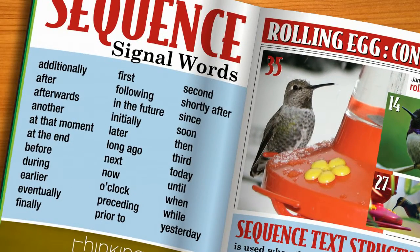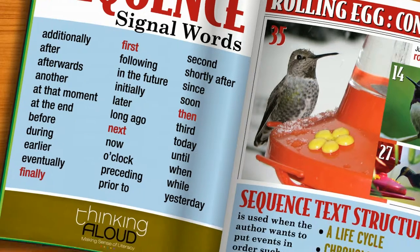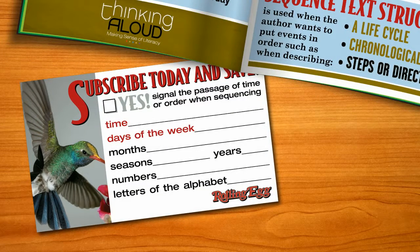Knowledge seekers are aware that authors use signal words, which can help to indicate to their readers the text structure being used. Signal words which identify sequence text structure include first, then, next, or finally. Authors also utilize time, days of the week, months, seasons, years, numbers, and even letters of the alphabet to signal the passage of time or order when sequencing.